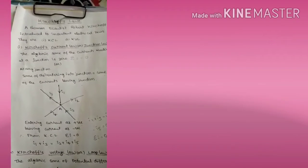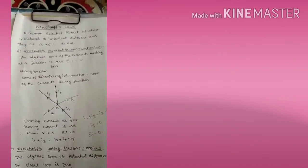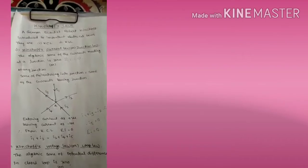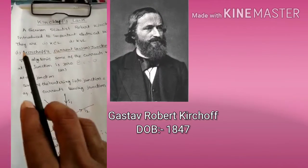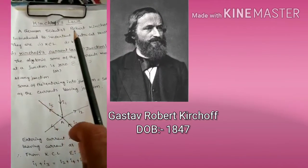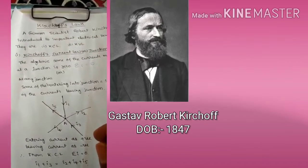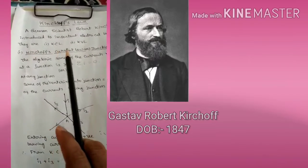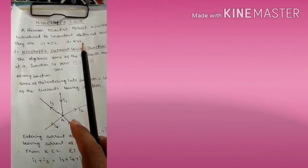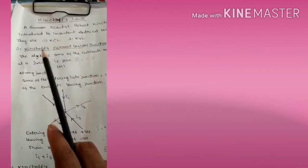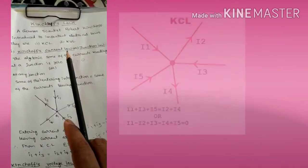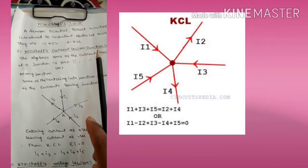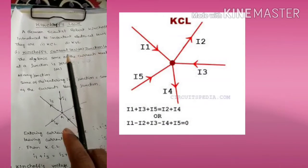Good morning students. Today we are discussing Kirchhoff's laws. Robert Kirchhoff is a German scientist who introduced two important electrical laws: KCL and KVL. The first is KCL — Kirchhoff's Current Law — which is also called the Junction Law.